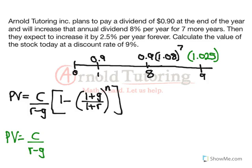Arnold Tutoring Inc. plans to pay a dividend of $0.90 at the end of the year and will increase that annual dividend 8% per year for 7 more years. Then they expect to increase it by 2.5% per year forever going forward. Calculate the value of the stock today.